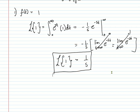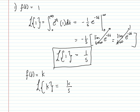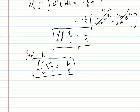In general, if f(t) equals any constant k, then the Laplace of k equals k over s. That constant can be moved outside the integral sign, and the result follows the same derivation. So the Laplace of any constant is just that constant divided by s.